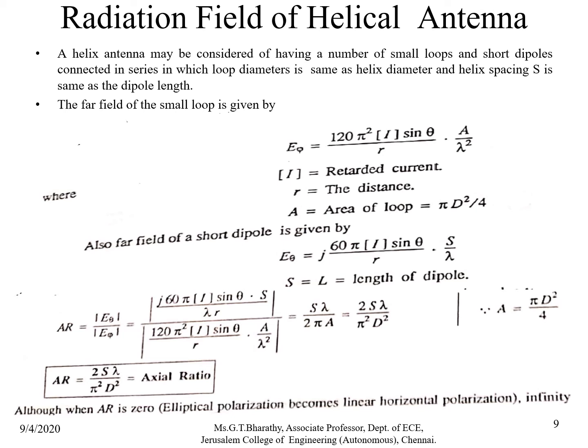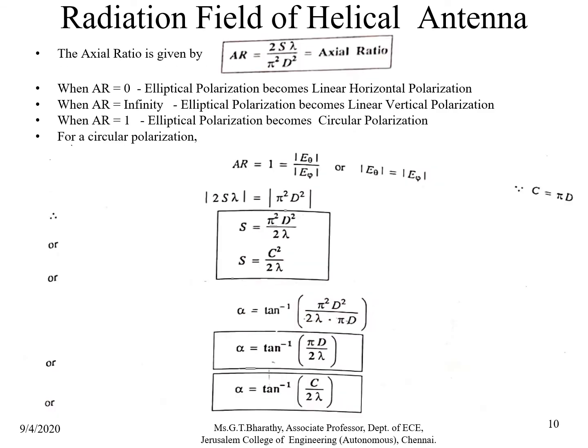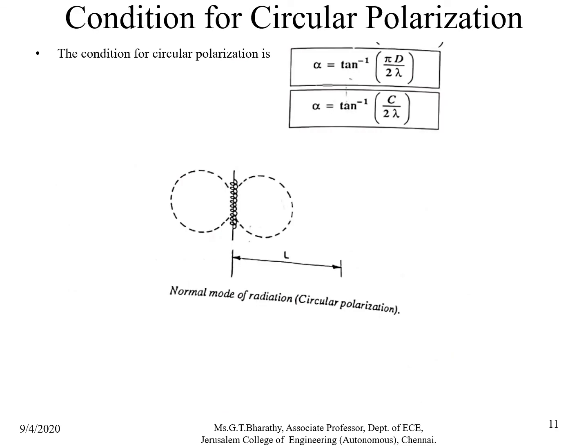When AR = 0, elliptical polarization becomes horizontal (linear) polarization. When AR = ∞, it becomes vertical linear polarization. When AR = 1, the polarization is circular. For circular polarization, |E_θ| = |E_φ|, giving the spacing S = C² / (2λ), and the pitch angle α = tan⁻¹(πd / (2λ)) = tan⁻¹(C / (2λ)). This is the condition for circular polarization in the normal mode of radiation.